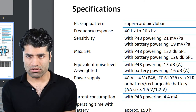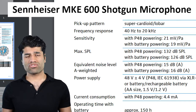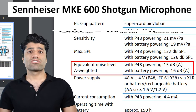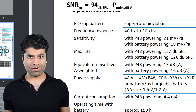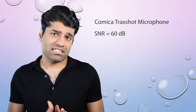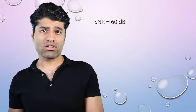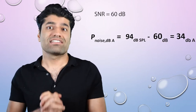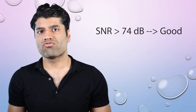Now let's look at some examples. Looking at the spec of the Sennheiser MKE 600 microphone, the noise is expressed in equivalent noise level rather than SNR — that is just the power of noise in decibels. Or, if you look at the Comica track shot microphone, it is expressed in SNR. And if you want to get to the equivalent noise level, just subtract 60 from 94 and you will get 34 dB(A) noise level.